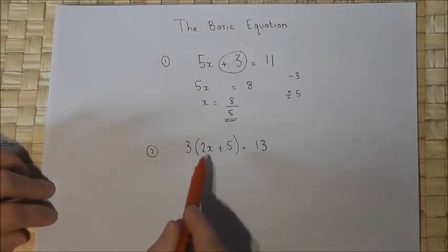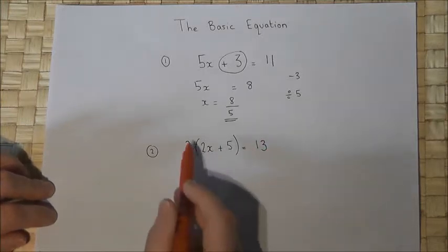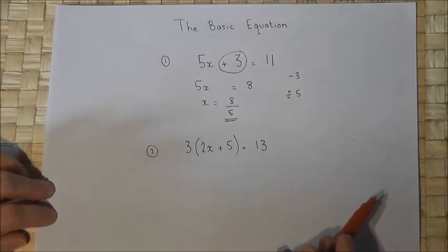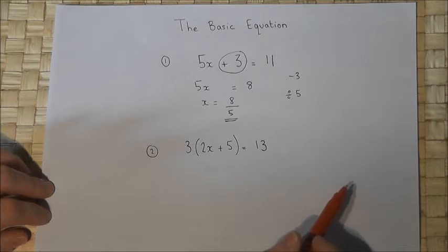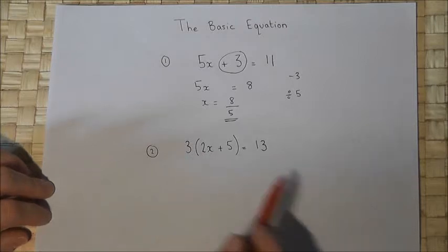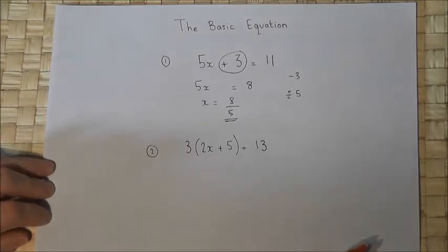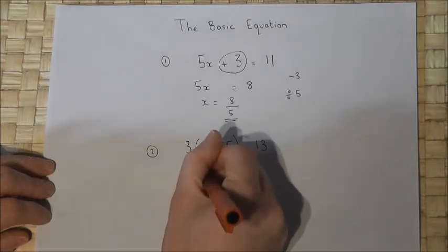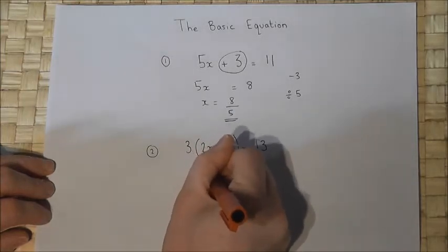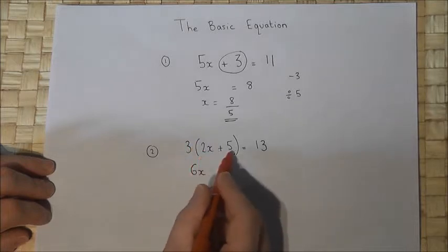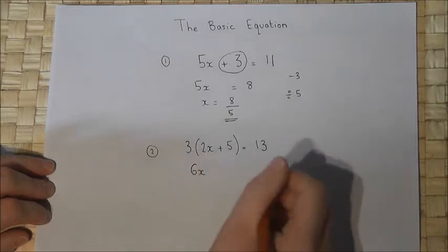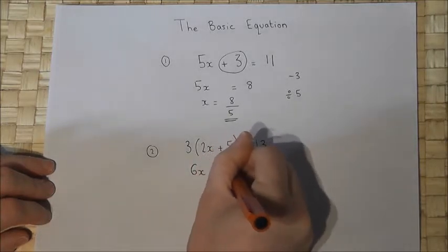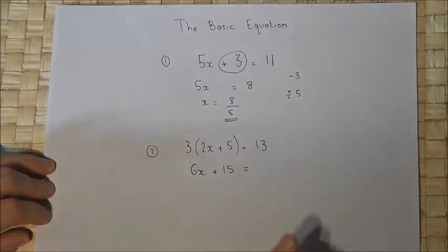Looking at the second example, I have a bracket. The general rule is to expand the bracket first. Multiplying by 3: 3 times 2x equals 6x — remember the number before the bracket means multiply all terms inside by that number. 3 times 2x is 6x, 3 times 5 is 15, and this equals 13.